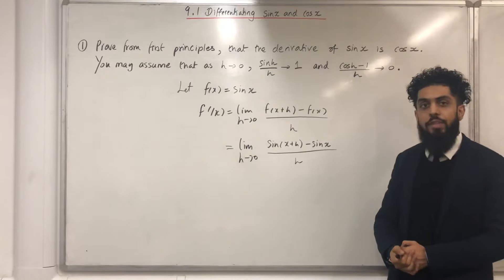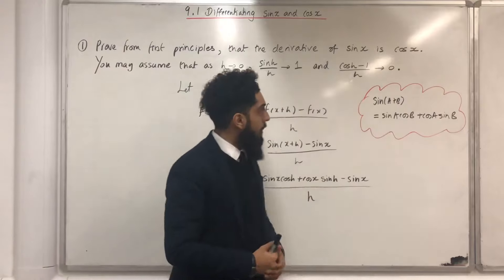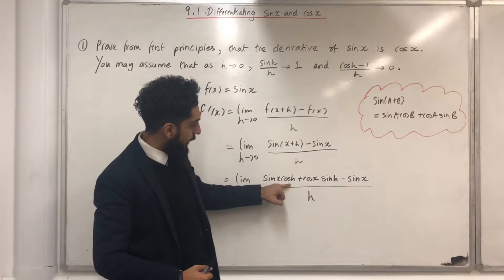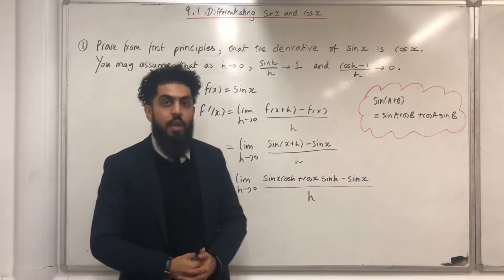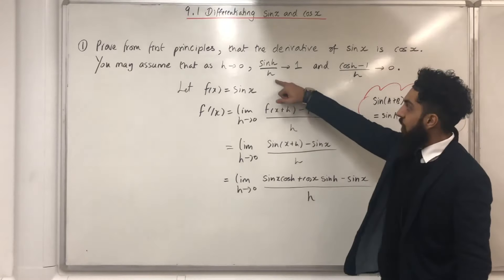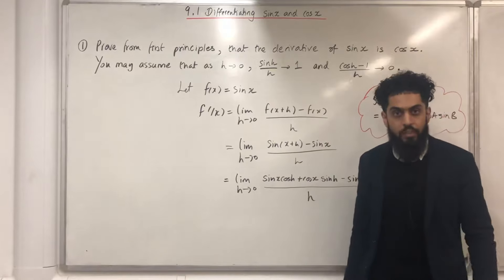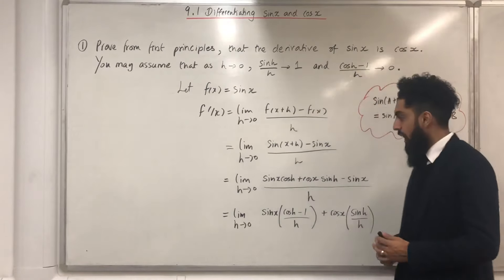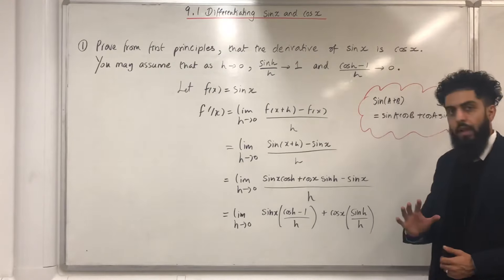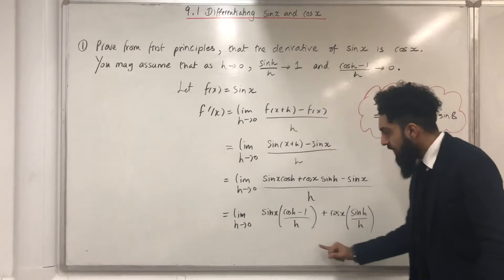The next step is to expand Sine of x plus h using the addition formula for Sine of a plus b. Using this addition formula, expanding Sine of x plus h gives us Sine X Cos h plus Cos X Sine h. We then rewrite the fraction so that we end up with Sine h over h and Cos h minus 1 over h in the fraction. After rearranging and factorising, we can rewrite this fraction in the following form. Now we take the limit as h tends to 0.